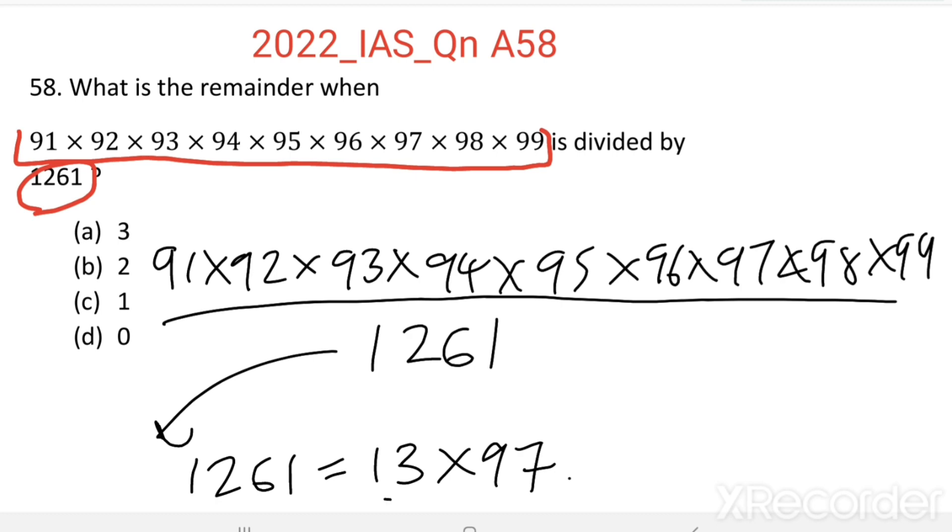And these two are prime numbers as well. Then instead of 1261, let us write 13×97. This 97 cancels with 97. 91 = 7×13, then this 13 also cancels.